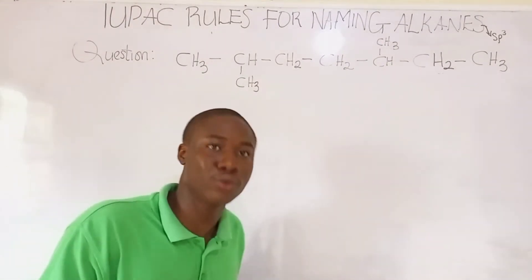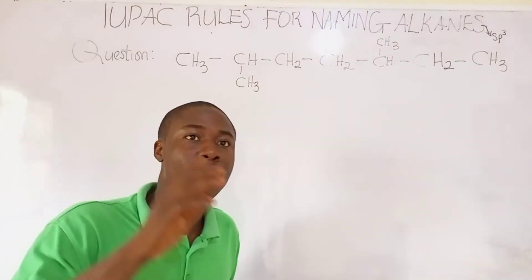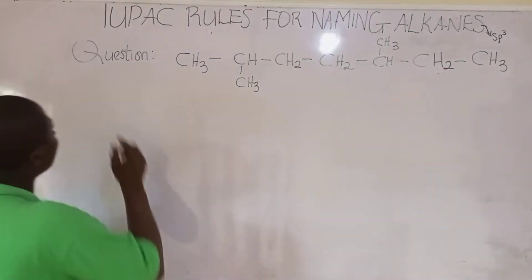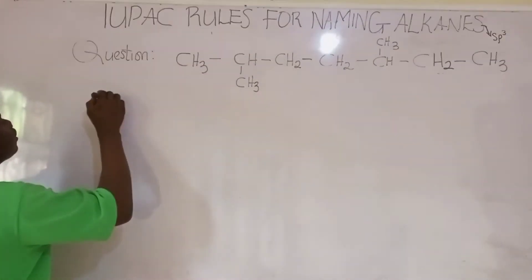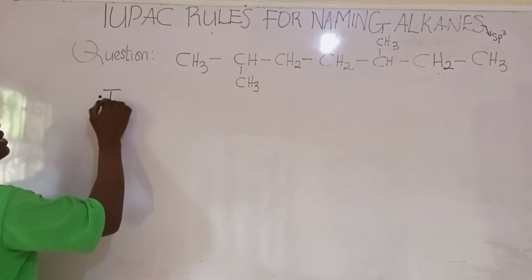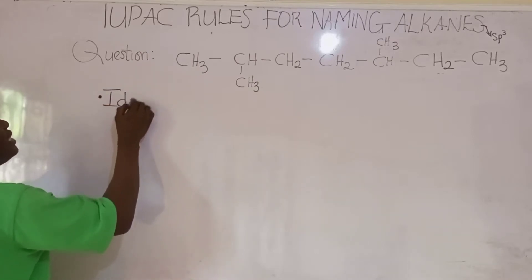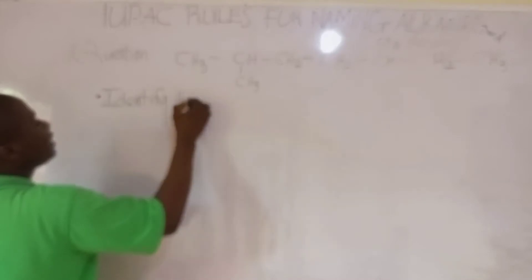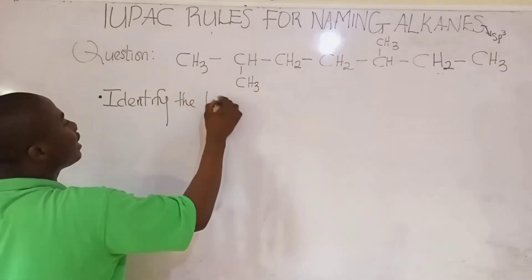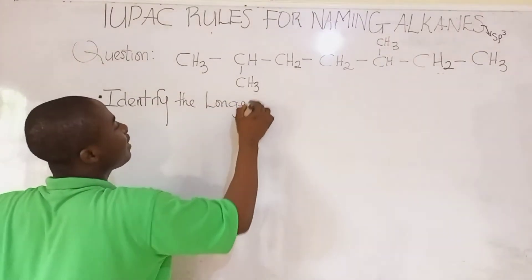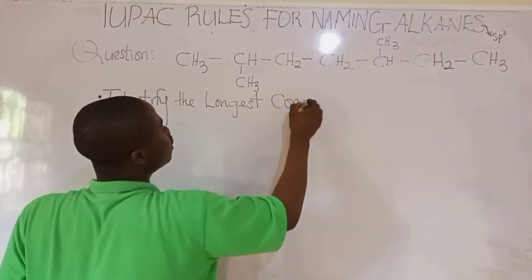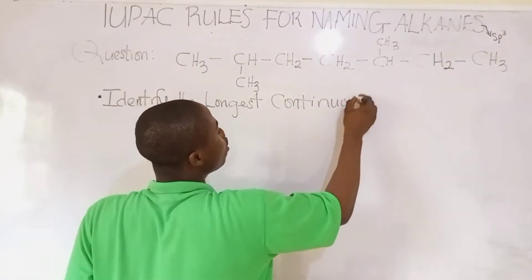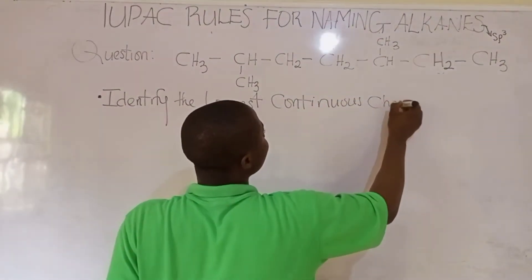There are some basic rules that must be noted when naming an alkane. The first rule we'll be discussing is identification — specifically, identify the longest continuous chain.